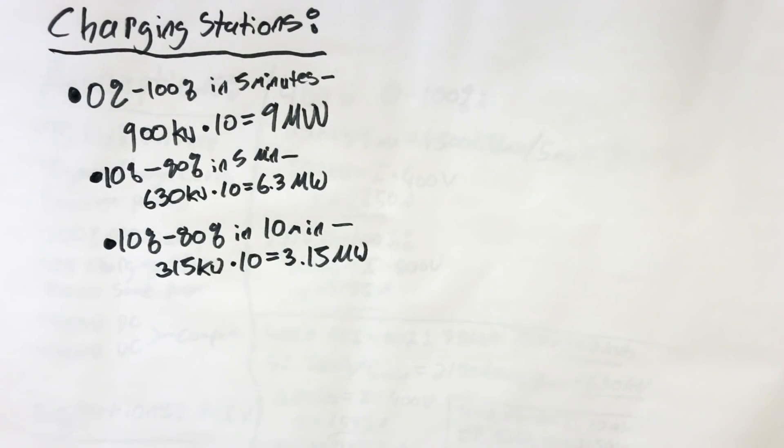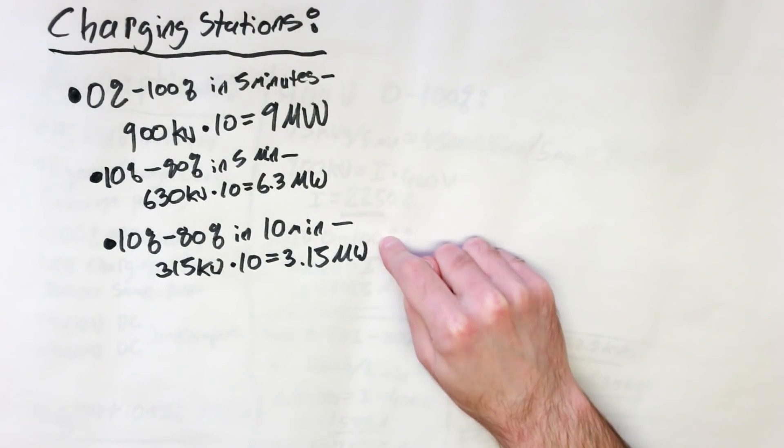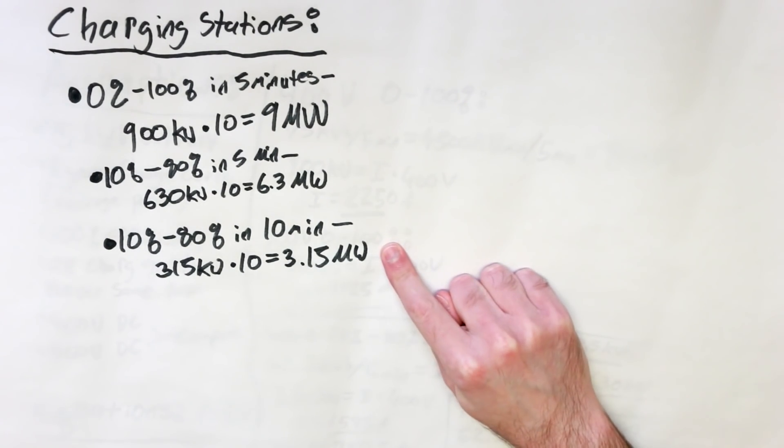Alright, so 900 kilowatts per car times 10 stalls equals 9 megawatts. Continuing on down the line of our hypothetical scenarios, our next was 10% to 80% in 5 minutes, which required 630 kilowatts for 5 minutes times 10 cars is 6.3 megawatts for the whole station. If the power demand for these three hypothetical 10-stall superchargers sounds like a lot, it's because it is.